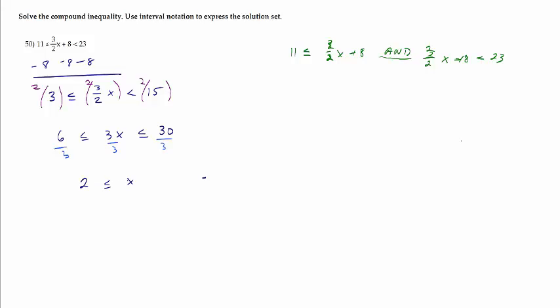And then my last step is to divide all three sides by 3. We'll have 2 is less than or equal to x is less than 10. If you want to graph it, real numbers between 2 and 10 — we're going to go from 2 up to 10. Less than or equal to 2 means I'm going to use a square bracket including 2, and parentheses on the 10 because I cannot use 10 as part of my solution set.